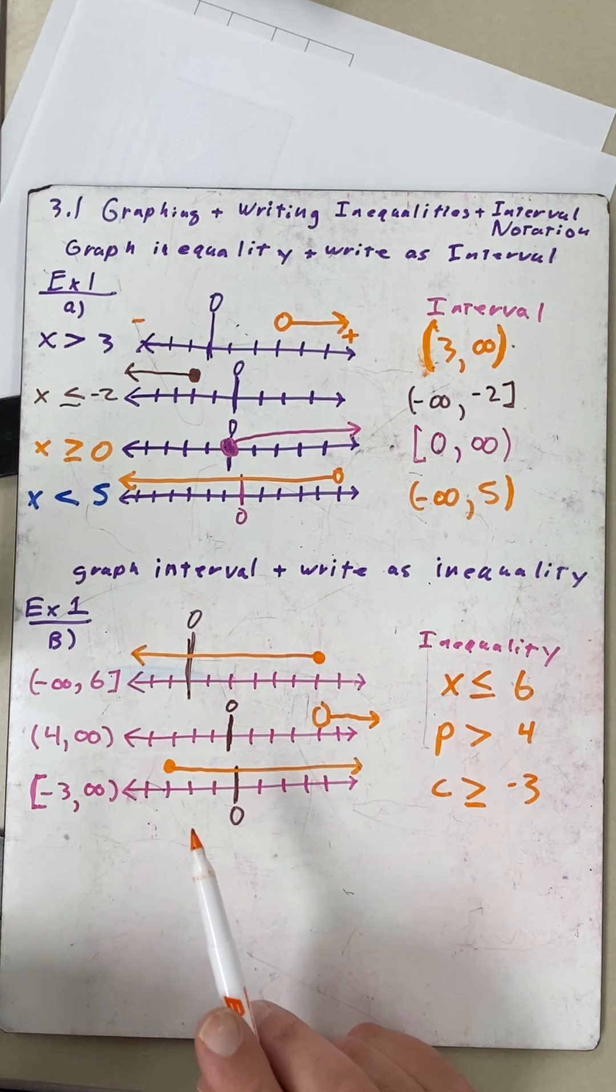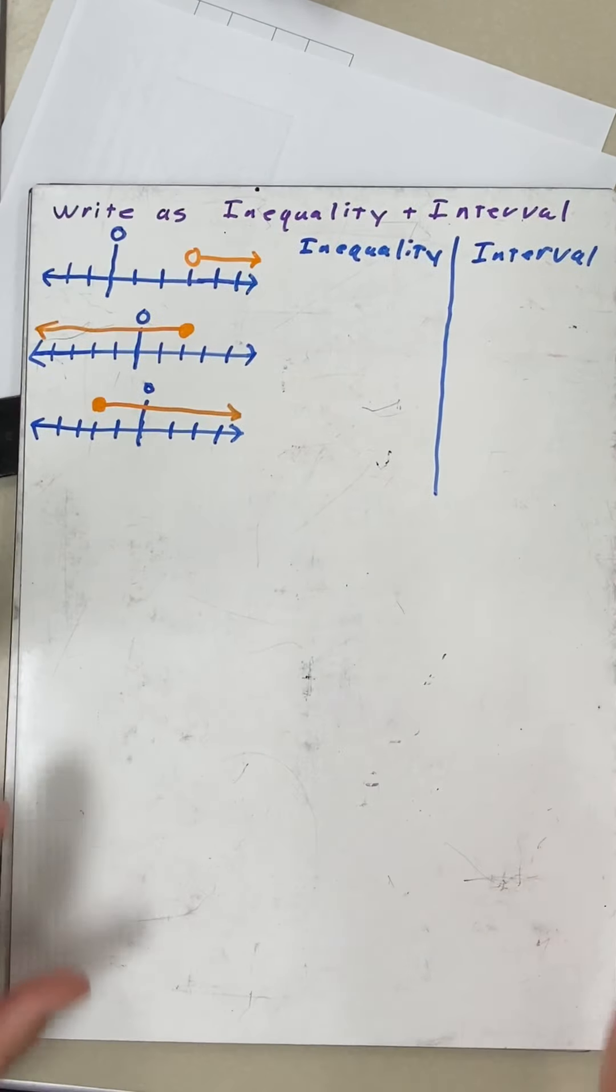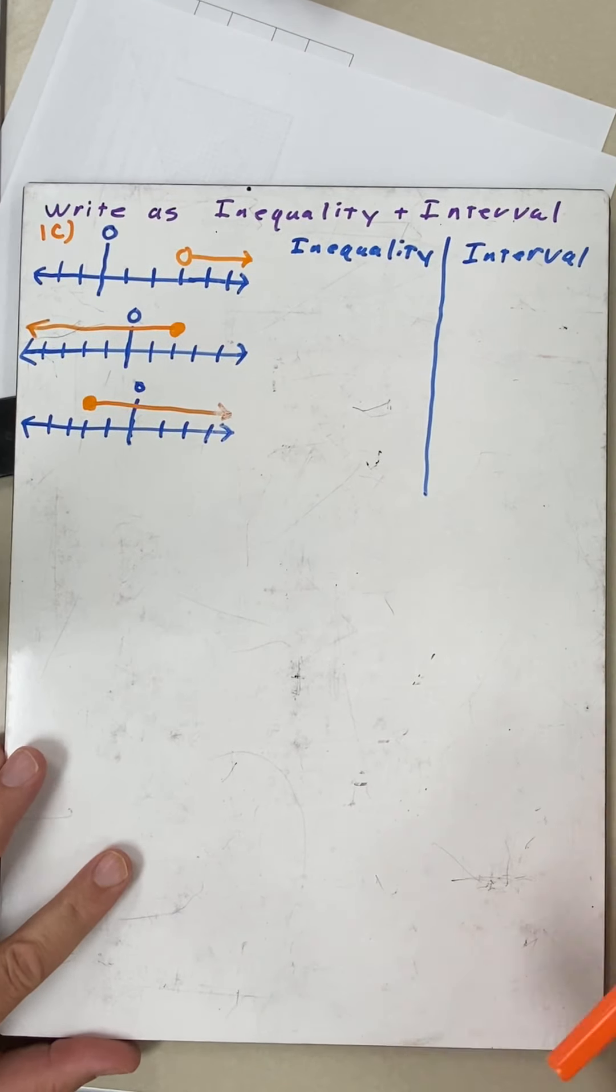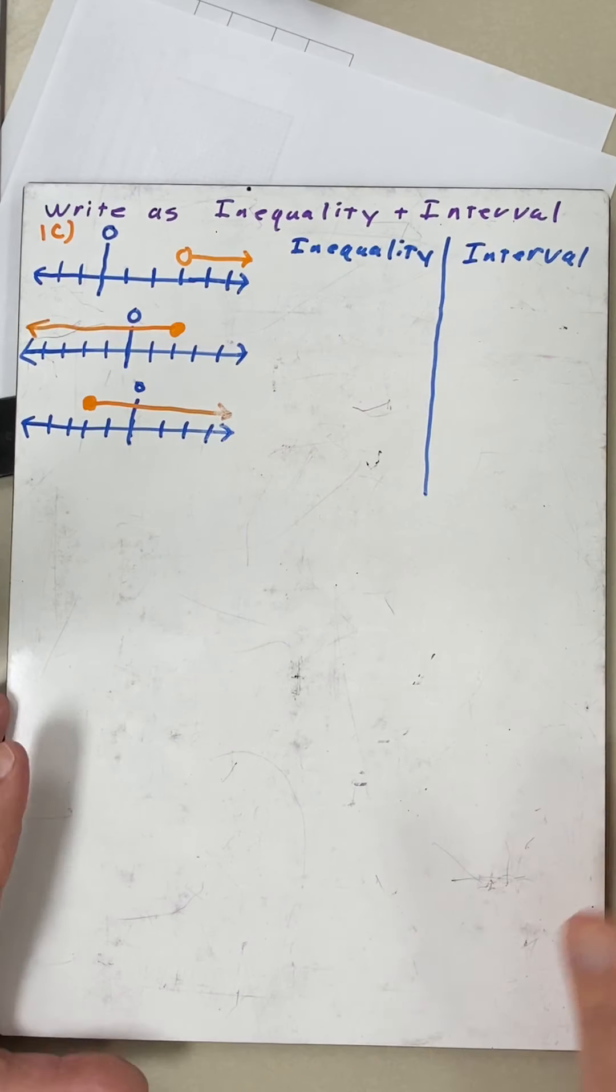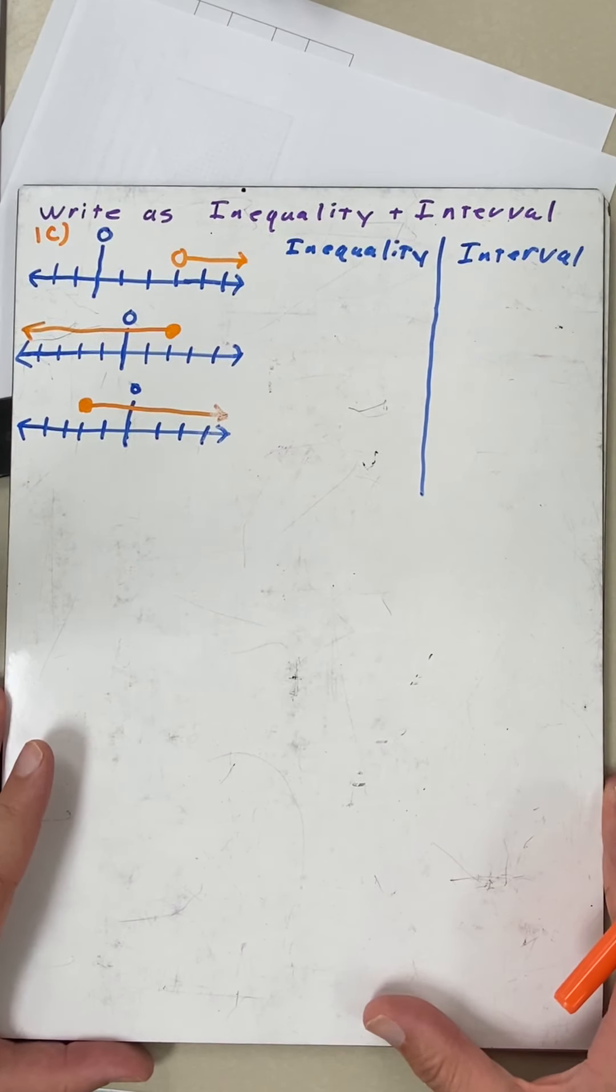That concludes example 1B. Now the last iteration of this is 1C. This is example 1C. Now I give you a graph, I want you to write the inequality and the interval. If you think you know what you're doing, pause the video now and answer these three.